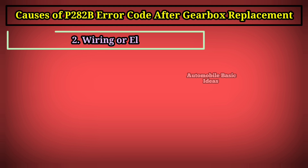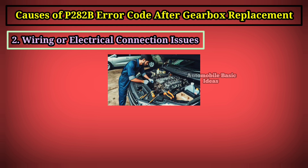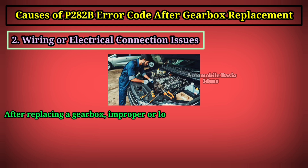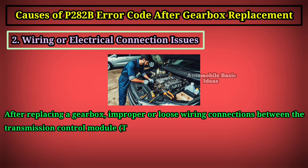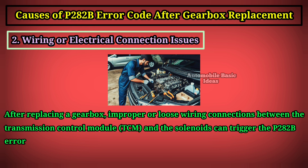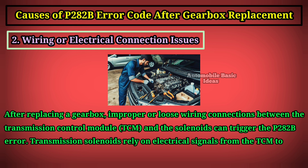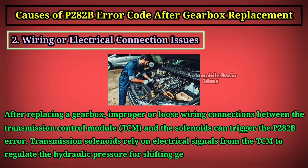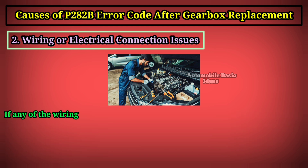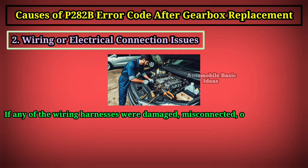Two: wiring or electrical connection issues. After replacing a gearbox, improper or loose wiring connections between the transmission control module (TCM) and the solenoids can trigger the P282B error. Transmission solenoids rely on electrical signals from the TCM to regulate the hydraulic pressure for shifting gears. If any of the wiring harnesses were damaged, misconnected, or not properly secured during the gearbox replacement, the signal to solenoid K could be disrupted, causing performance issues.